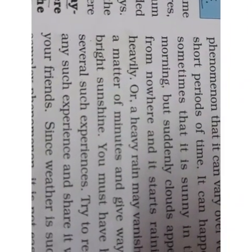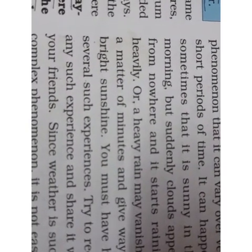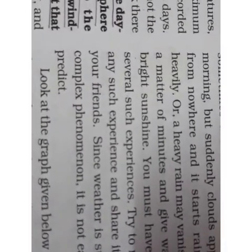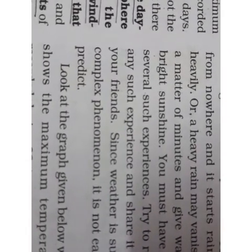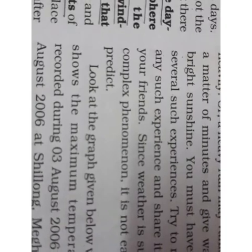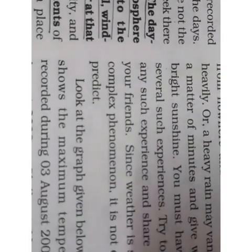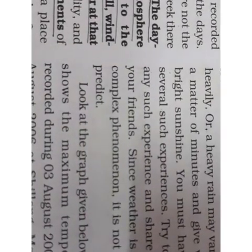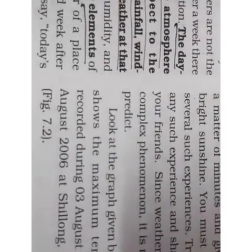Or a heavy rain may vanish in a matter of minutes and give way to bright sunshine. You must have had several such experiences — try to recall any such experience with your friends. Since weather is such a complex phenomenon, it is not easily predictable. You can see bright sunshine and then sudden rain and even a rainbow. The predictions give you just an idea of what tomorrow's weather might be — it is not necessary that what they predict will happen at exactly that time.